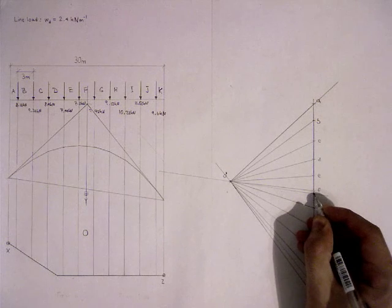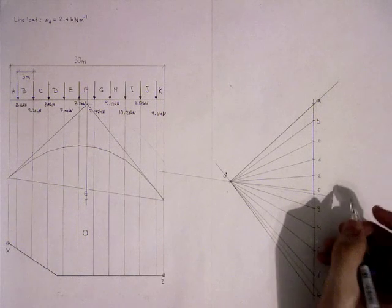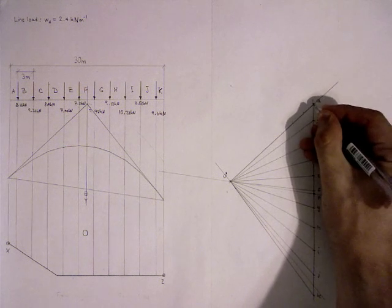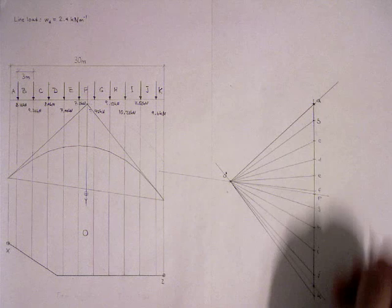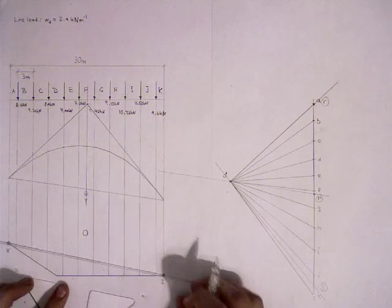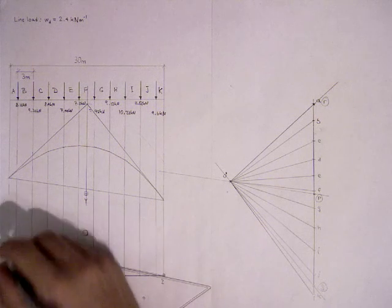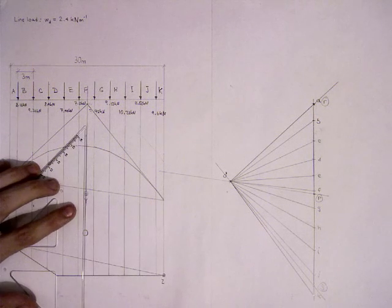The point where the closing line crosses the load line is called P. The points where the two tangent lines cross with the load line are called R and S. Now draw the real closing line in the form diagram, and draw both tangent lines.